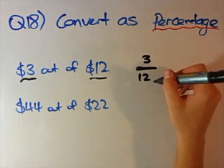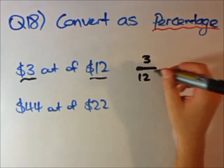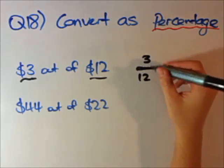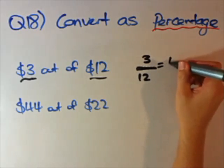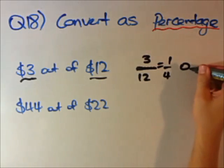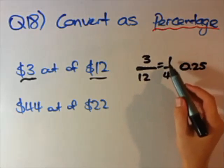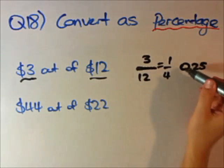So 3 over 12 — first I'm going to put it into its simplest form. 3 goes into 3 and 3 goes into 12, so we write this as 1 over 4. Now 1 over 4 is the same as a quarter, or 0.25 as a decimal — like a quarter of a cake or a quarter of a pie.